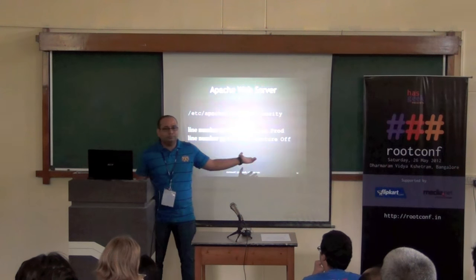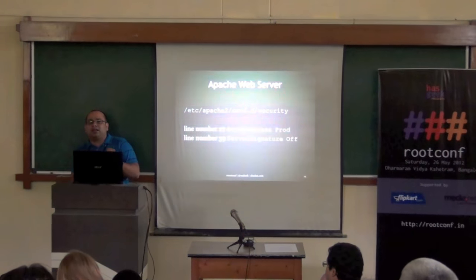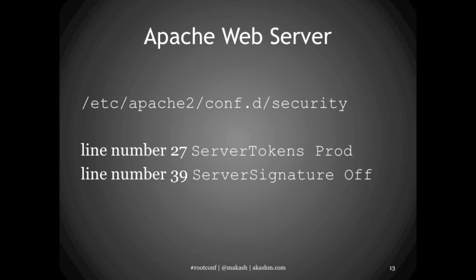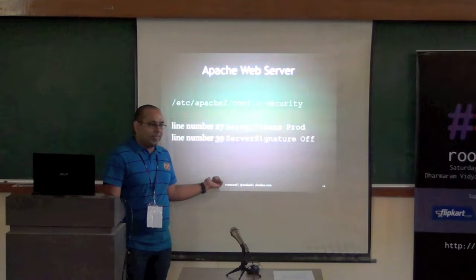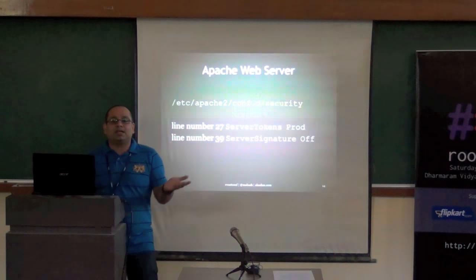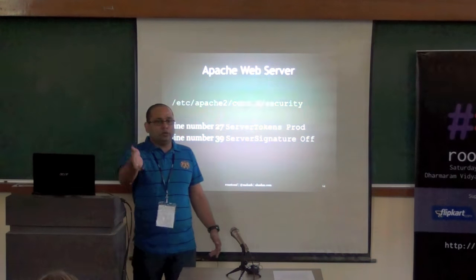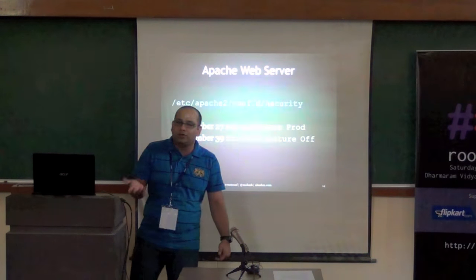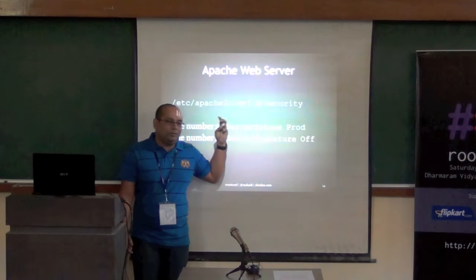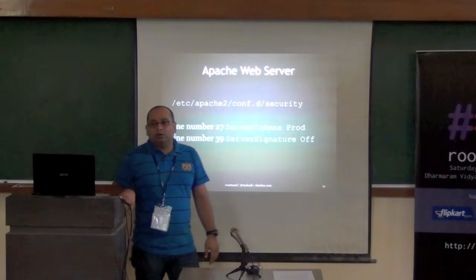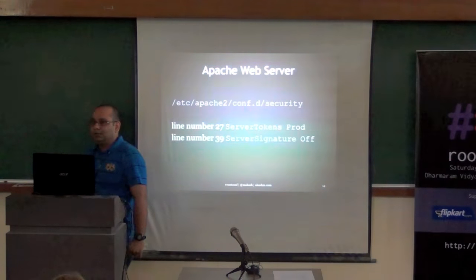In /etc/apache2/conf.d/security, lines 27 and 39 — ServerTokens and ServerSignature — are commented out by default. You should uncomment these. If I want to find out what your website is running, I just put a filename I know doesn't exist after your domain — if you don't have a custom 404 error page, it will tell me exactly what Apache version and modules you are running. Does it stop an attacker? No, but why make it easy? There is no cost to uncommenting two lines.